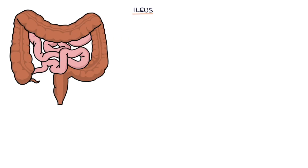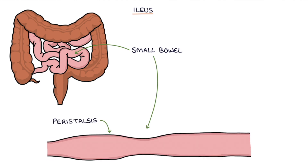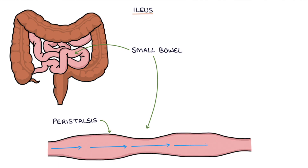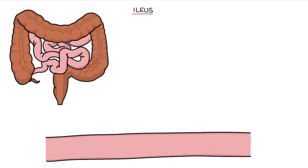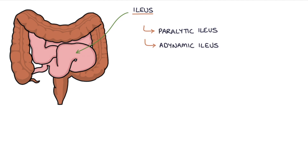Ileus is a condition affecting the small bowel where the normal peristalsis that pushes the contents along the length of the intestines temporarily stops. It may be referred to as paralytic Ileus or adynamic Ileus.